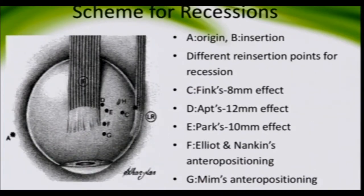The maximum muscle length available for recession is 12 millimeters — you cannot attempt a larger recession than 12 millimeters, as this is restricted by the lateral margin of the inferior rectus. Inferior oblique surgery is quite forgiving, which is why so many surgical techniques have been described. Different surgeries have different effects because the inferior oblique functions as an elevator, abductor, and extorter. When operating, we have to consider two axes — horizontal and vertical.